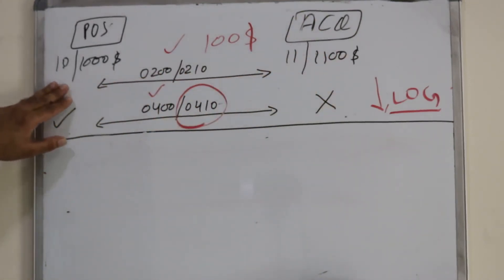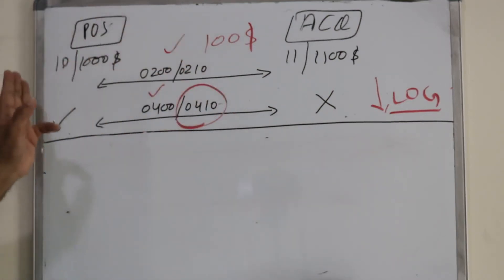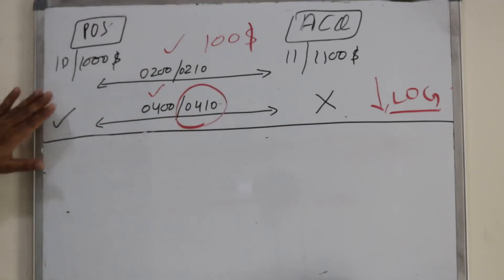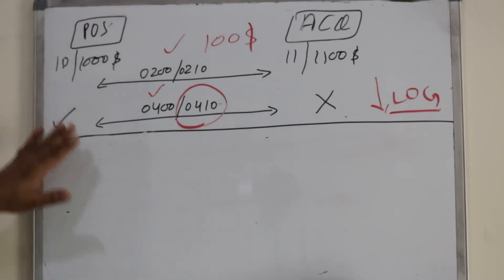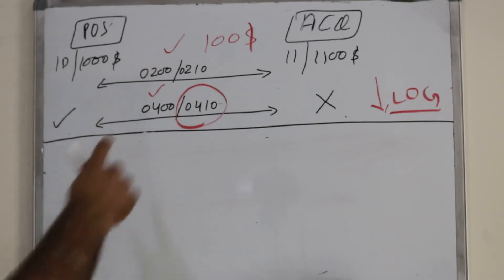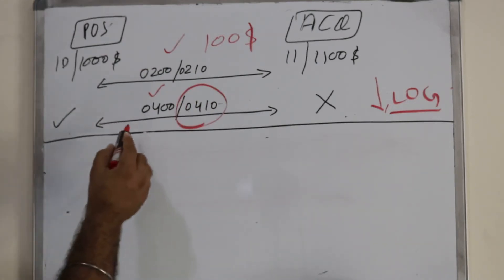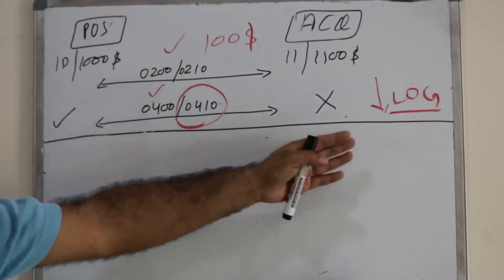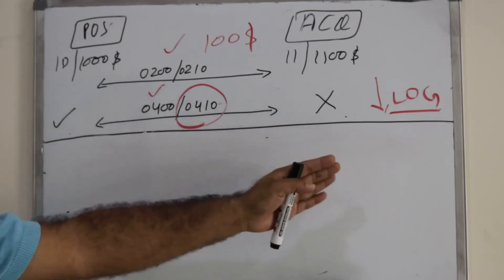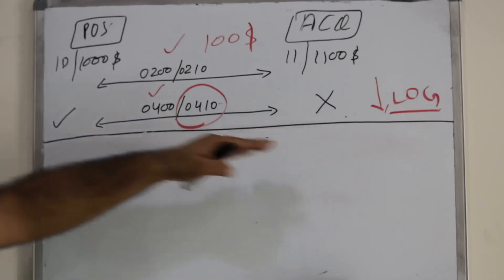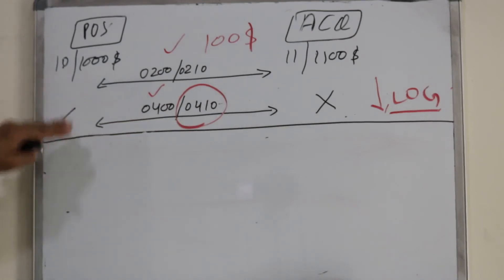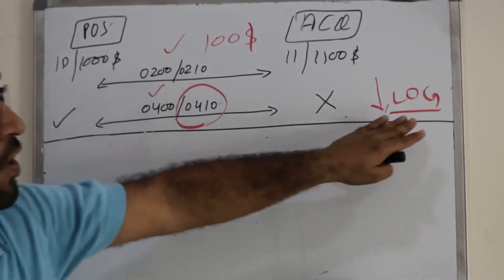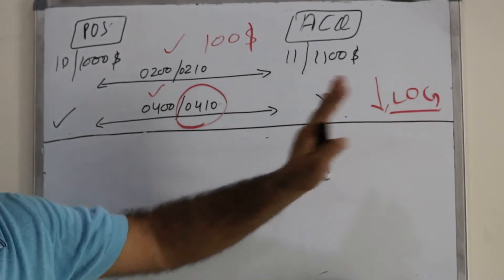But due to some reason, the POS device sent a reversal — a 400 message — back to the acquirer. Something went wrong in the acquiring bank: they sent an approval back to the POS device but could not log this reversal to the acquiring database.